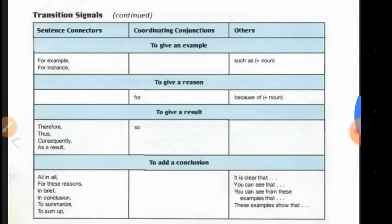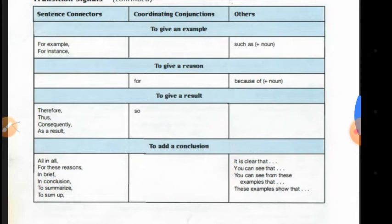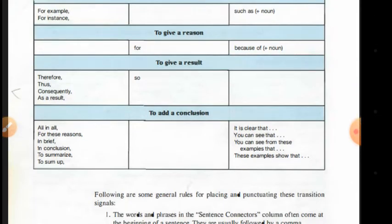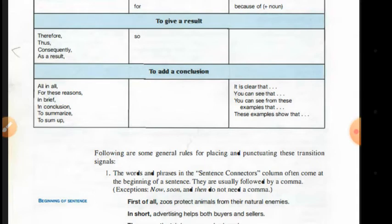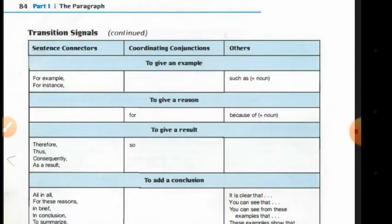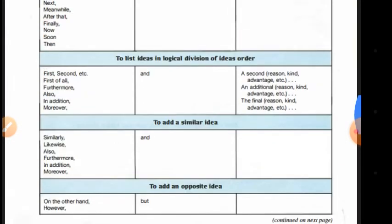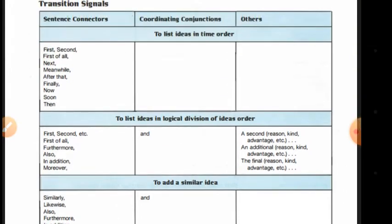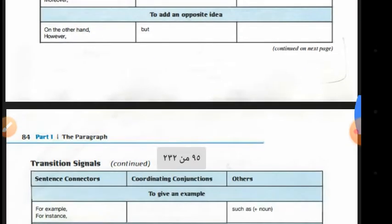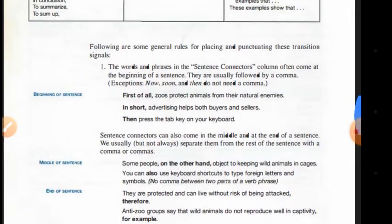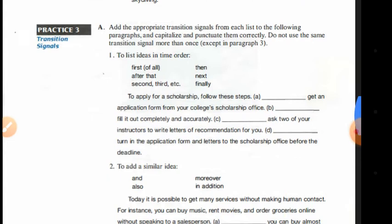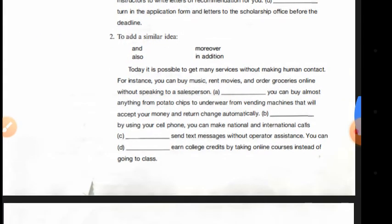Examples of sentence connectors include: 'for example' — to give examples; transitions to give reasons; transitions to add conclusions; transitions to signal opposite ideas; transitions to signal similar ideas. The categories are: division of ideas order, time order, and process order. Then we go to practices and talk about using transition words or phrases to fill in the gaps in the given examples.